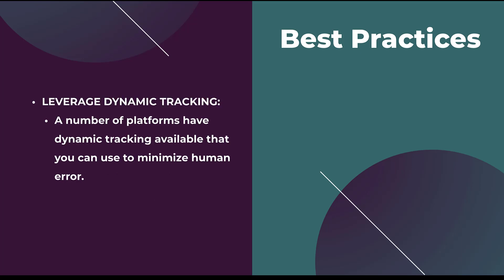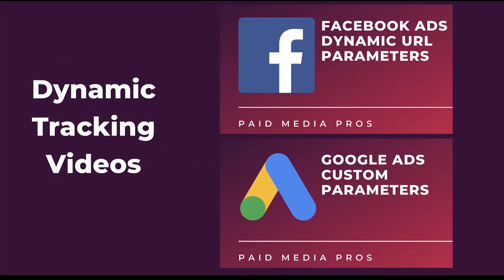Lastly, don't be afraid to leverage dynamic tracking. There are a number of platforms that will allow you to utilize that, and honestly the less you have to type in, the less chance you're going to have of messing something up and causing the double line item issue we've talked about. Facebook ads have dynamic URL parameters — they use two curly braces to pull in the campaign name, ad name, and ad set name dynamically so you don't have to type it in. And for Google Ads, you can create your own custom parameters based on the campaign name, ad name, keyword — lots of different options. This makes it so you don't have to set up custom tracking templates for every single portion of your campaign; you can have one tracking template that you know is right and then adjust your custom parameters to pull in information dynamically.